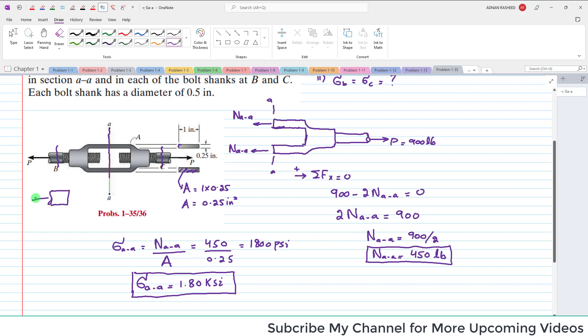This is the normal load P, and here the load will be equal to N_B. From our equation of equilibrium, sum of all forces along x direction is equal to zero, and taking the force in this direction as positive.